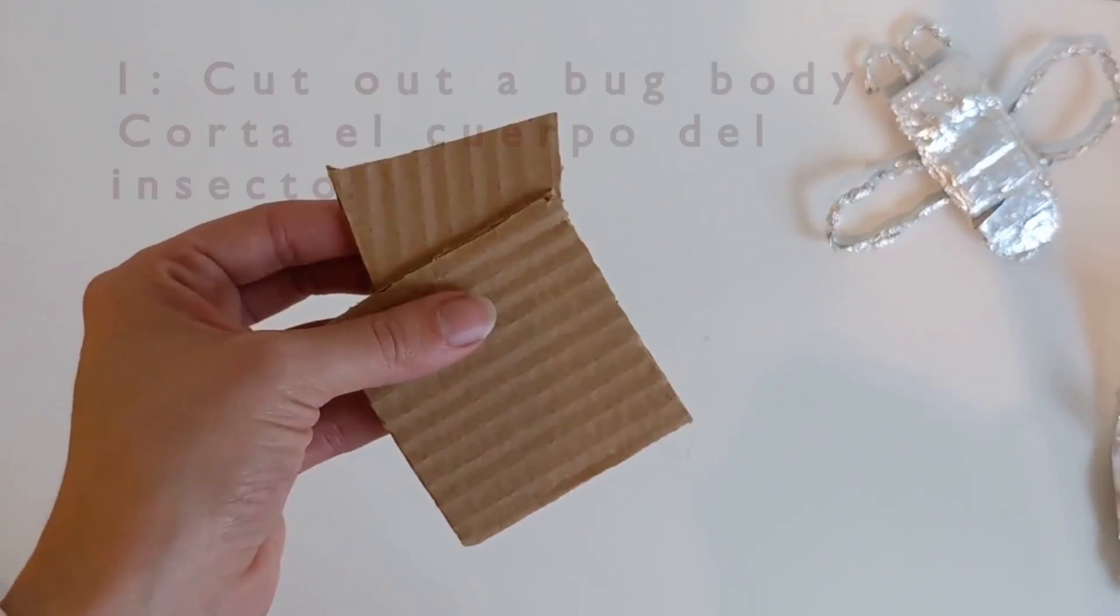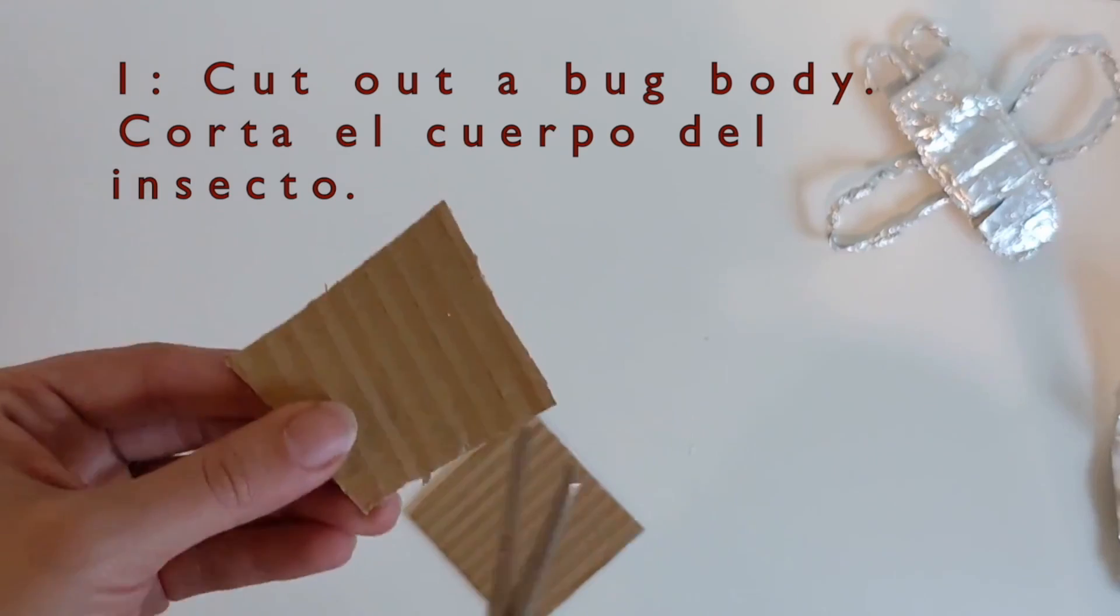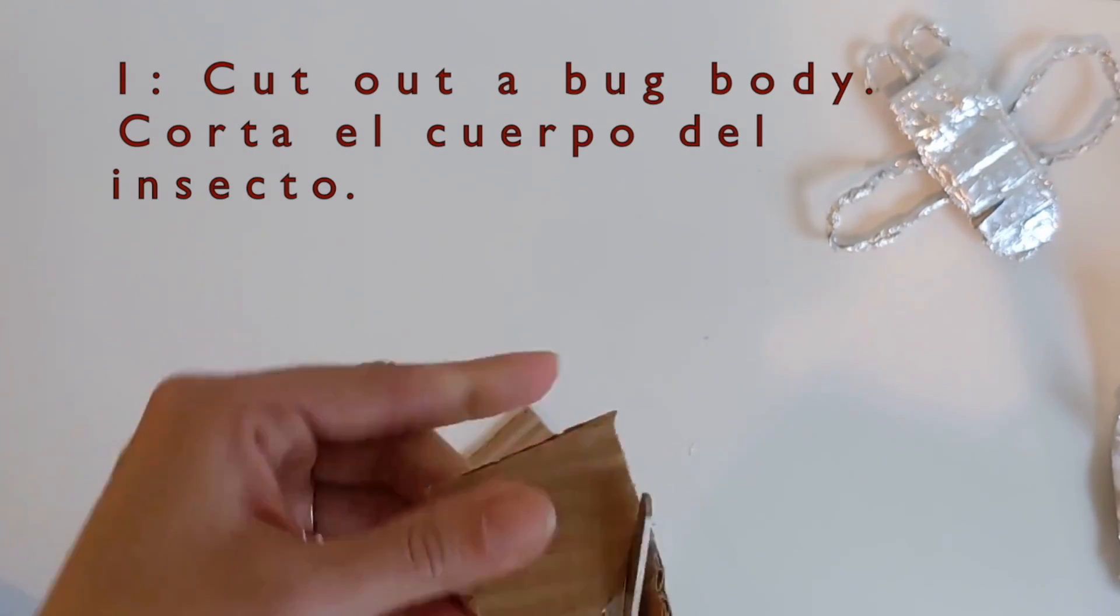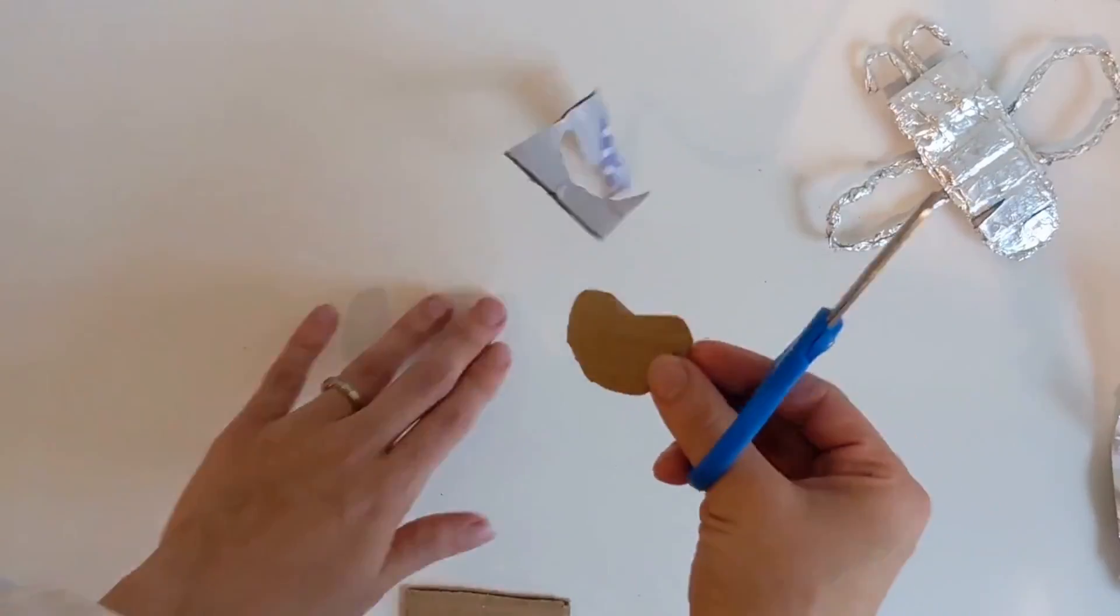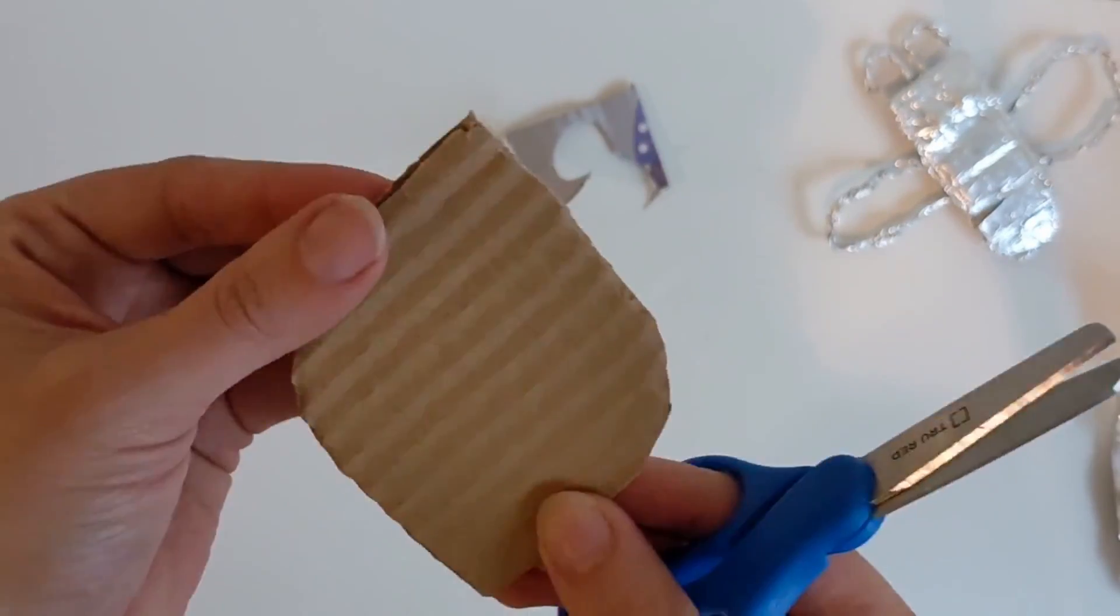To begin, use your scissors to cut out one or two big shapes out of cardboard. These shapes are going to be the body of your bug brooch or bug pin. Try to make these at least two fingers wide.